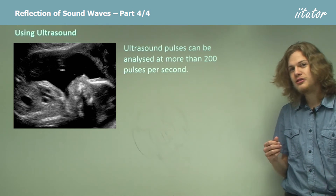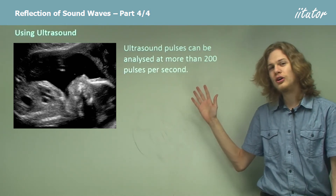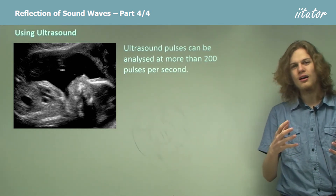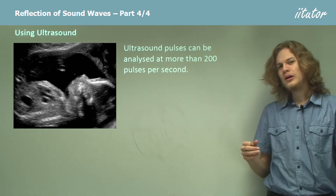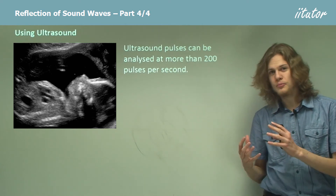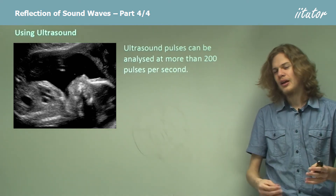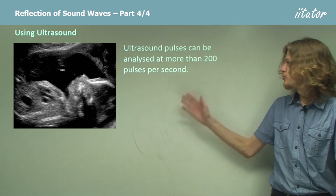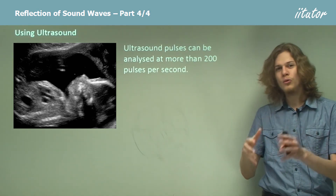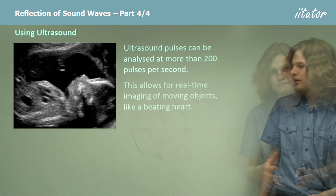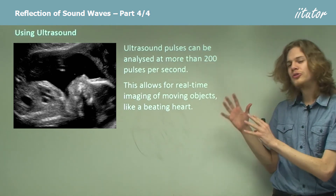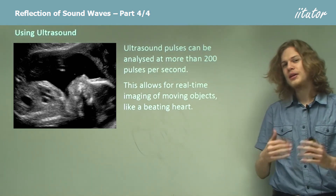Another advantage of ultrasound is that we can send out pulses more than 200 times per second. Ultrasound has a frequency above 20,000 hertz, so if we send a sound wave out at that frequency we can analyze it very quickly with computers. That means we can send out another pulse and analyze it quickly as well. Doing this at 200 pulses per second lets us see how the object we're imaging changes over time, creating real-time images of things moving inside a body.